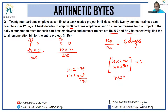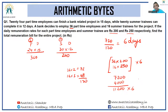16 into 250 is 4000, so altogether we get 11,200. Multiplying by 6 gives 66,000 plus 1,200, so the total remuneration bill for the entire project is 67,200 rupees.